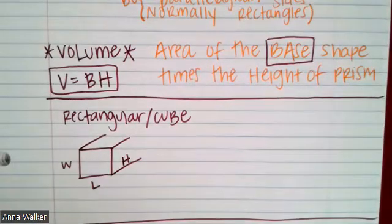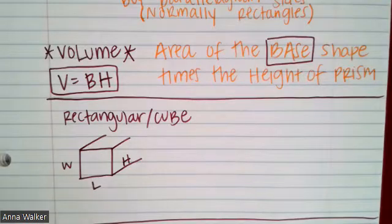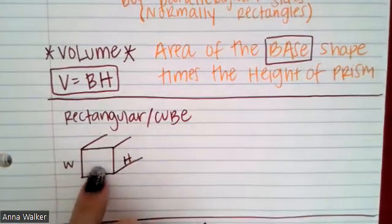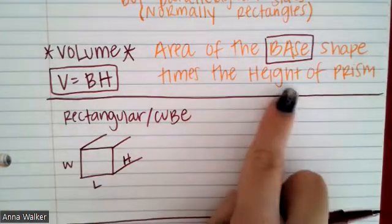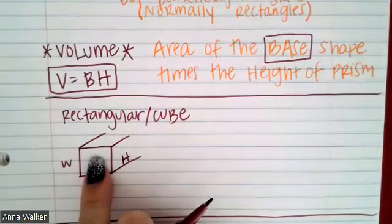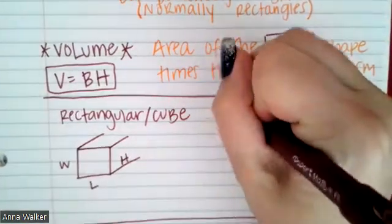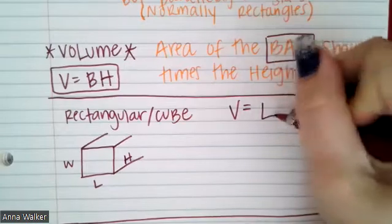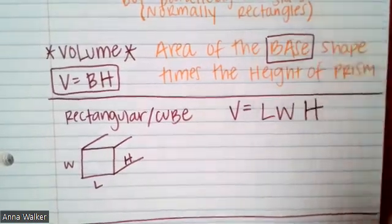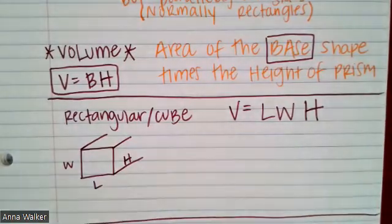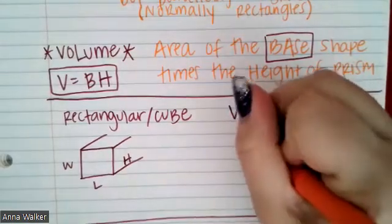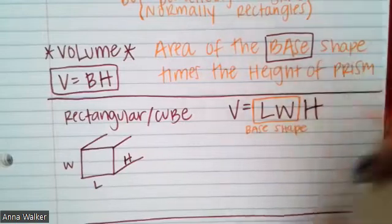A rectangular prism and a cube are not quite the same. A cube has sides that are all the same measurement; a rectangular prism does not. But the way we find the volume is the same. For these prisms, the base shape is a square or a rectangle. So we find the area of that base shape — length times width — and then multiply by the height of the prism. I'll put a box around 'length times width' to indicate it represents the area of the base shape.